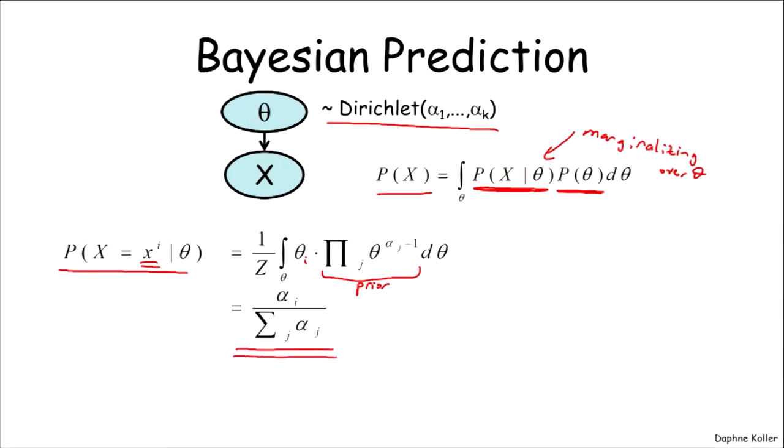And it turns out that when one does that, you end up with alpha i over the sum of all j's, alpha j, a quantity typically known as little alpha.